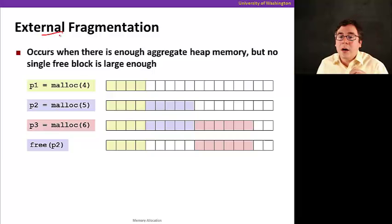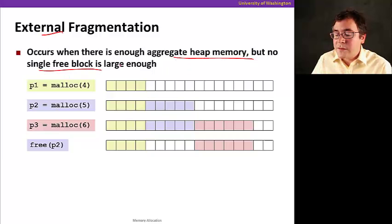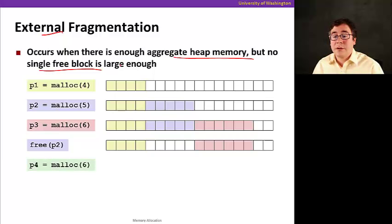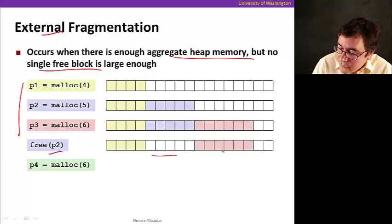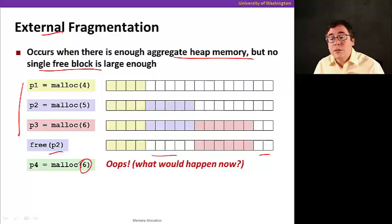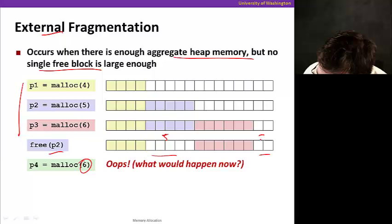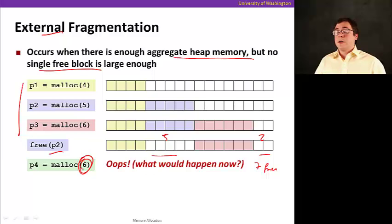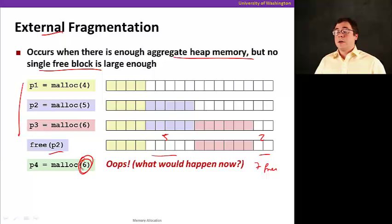So now, what's external fragmentation? Well, it's external because it's external to the block. So that means it occurs when there's enough aggregate heap memory, but no single free block that's large enough. So let me give you an example here. Suppose that we had the sequence of mallocs here, then we had the free. So we have five free here and two free. If I allocate six, I'm not going to do that. So what happens? So actually I have five free here and I have two free here. So I have a total of seven free. But none of them are large enough to honor this request of six. So what will happen now? Well, nothing. And by the way, this is actually dependent on the pattern of future requests. So it's actually difficult to measure whether external fragmentation is a problem or not.